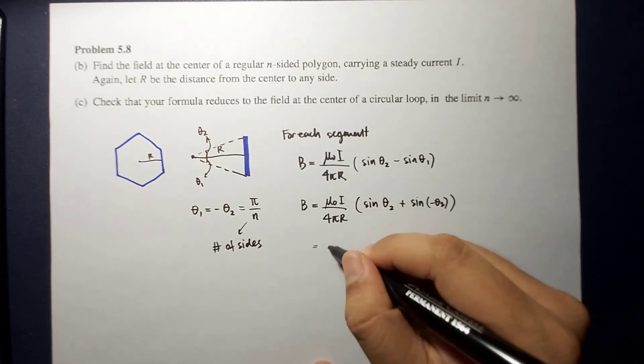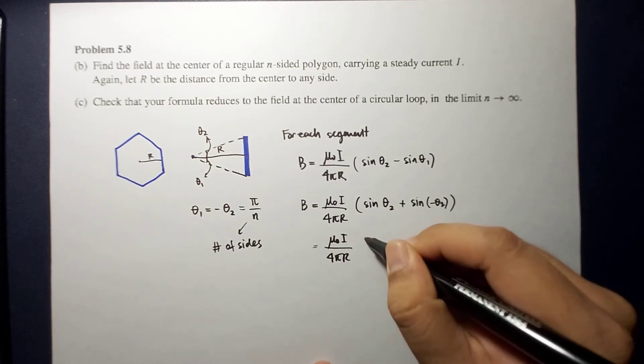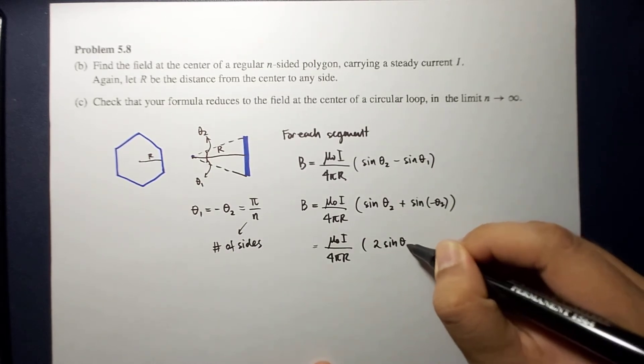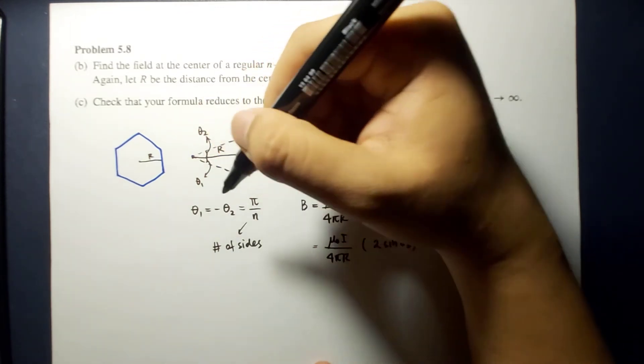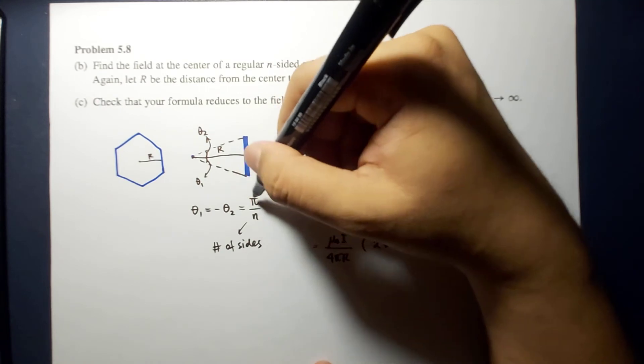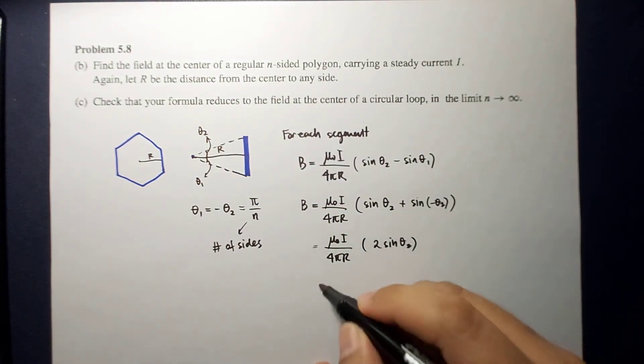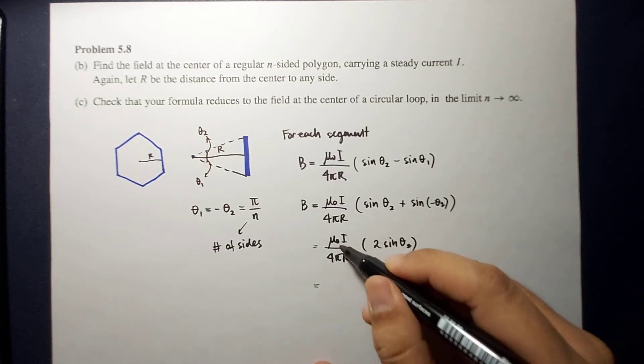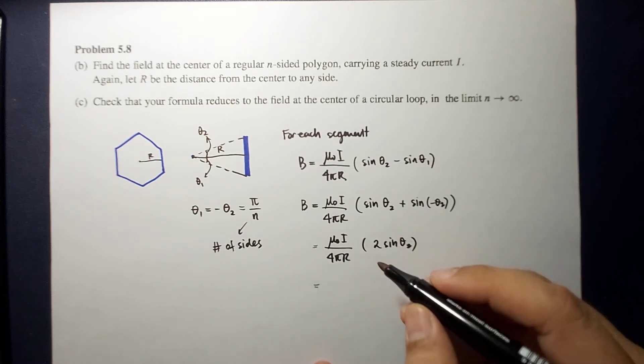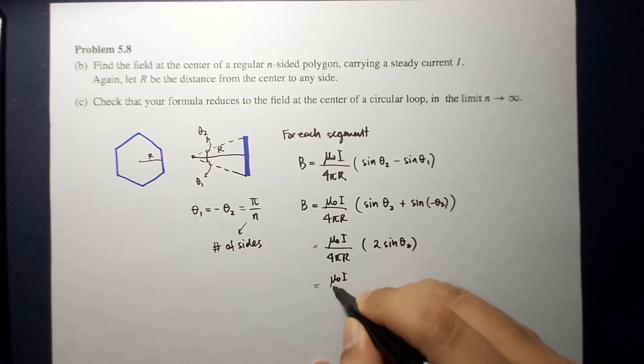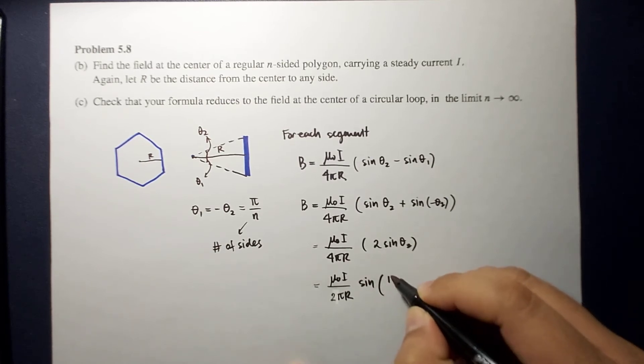So this is now equal to mu naught I over 4 pi r times 2 sine theta 2. And theta 2 is pi over n. Remember that this negative is only just the direction of your angle, but the amount of angle would still be pi over n. So therefore, this is now equal to mu naught I over 2 pi r times sine pi over n.